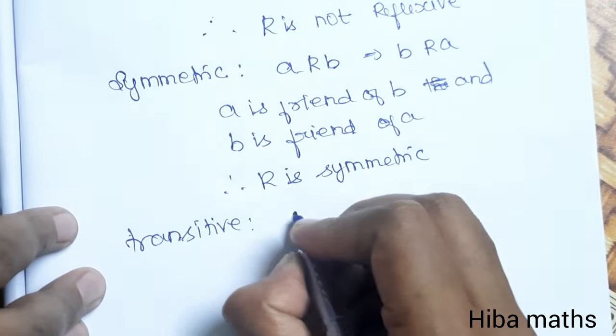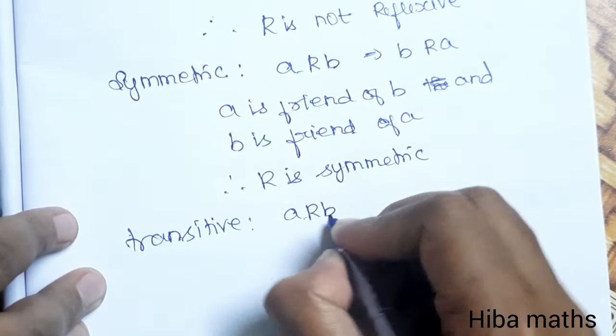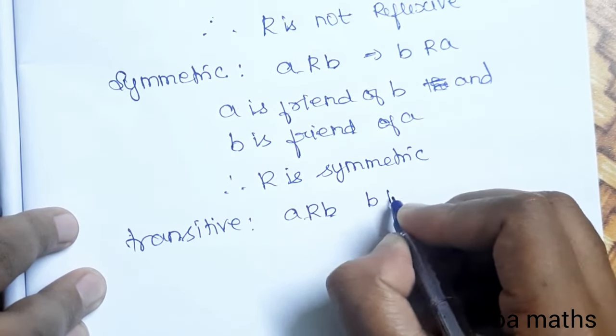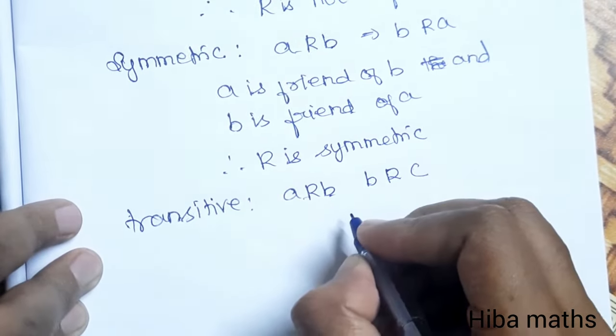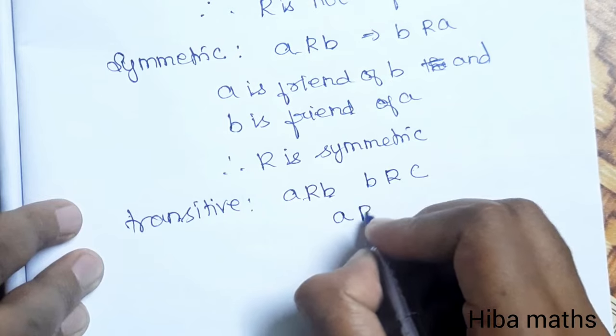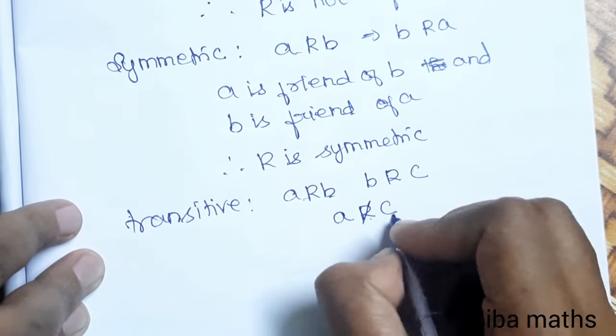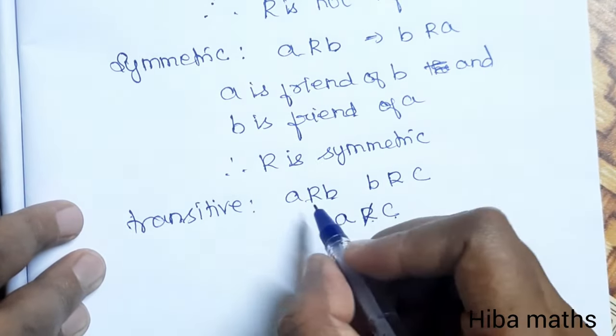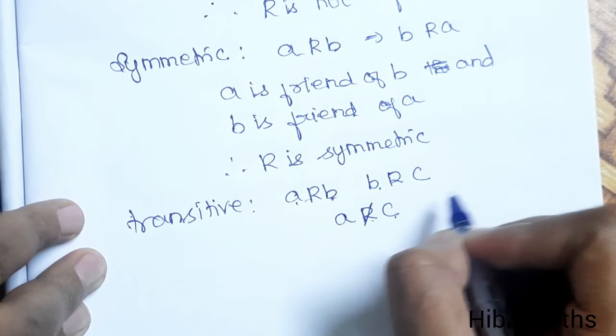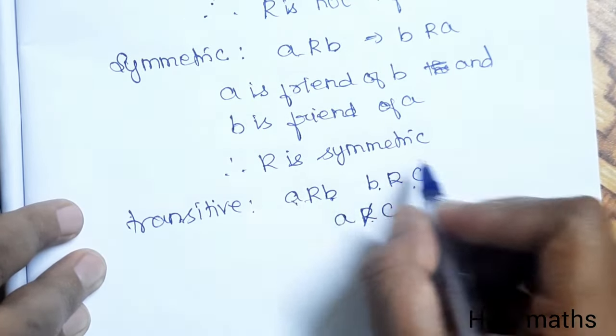Transitive: a is a friend of b, b is a friend of c, but a is not a friend of c. Maybe if you say a is a friend of b, b is a friend of c, then a is a friend of c.